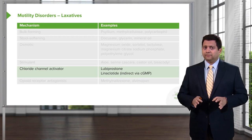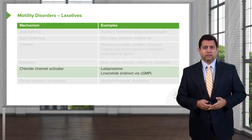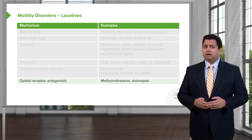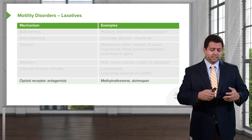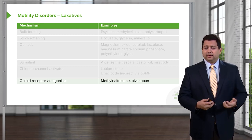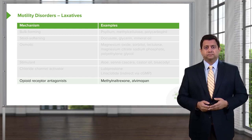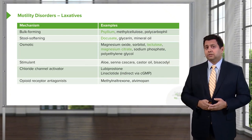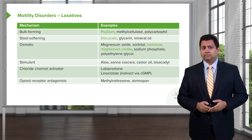Chloride channel activators are less commonly used at this point; they work by increasing fluid bulk within the stool. Finally, opioid receptor antagonists are an interesting approach. Since opioids are constipating, blocking the opioid receptor is believed to reduce constipation, particularly in patients who are already on opioids. That covers the list of laxatives, and this slide will be available as a downloadable resource for your slide library.